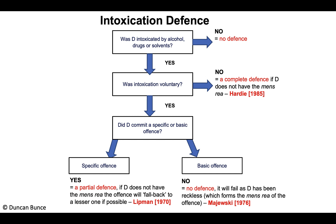The case of Lipman is a key example here. The defendant and his girlfriend were voluntarily taking LSD, which causes hallucinations and paranoia. He believed he was journeying to the centre of the earth, that there were snakes around him, and that his girlfriend was a venomous snake about to kill him, so he ended up killing her. It was only later, when he awakened from his drugged state, that he realised what he'd done. In that instance there would be a fallback to manslaughter.